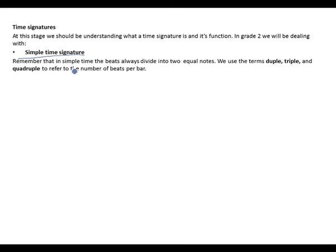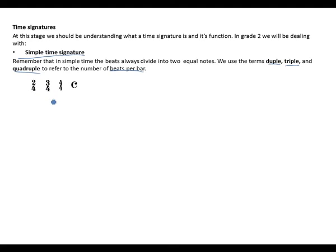In simple time signatures, beats always divide into two equal notes. We use the terms duple, triple, and quadruple to refer to the number of beats in a bar. The following time signatures will be dealt with in this grade: two-four, meaning two crotchet beats in a bar; three-four, meaning three crotchet beats in a bar.